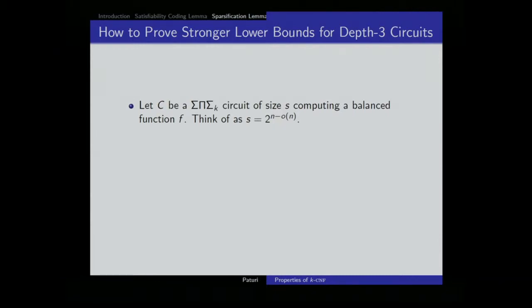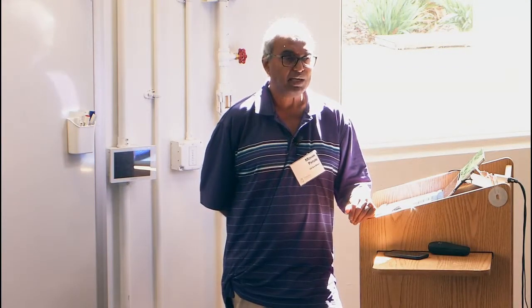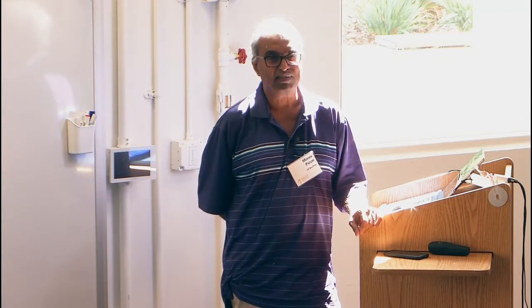There's no progress except for a very, very tiny improvement. I want to give an argument that shows that a random degree-2 GF2 polynomial requires size 2^(n - o(n)). It is somewhat ad hoc, a counting argument, and it will not get used anywhere beyond that counting argument. But at least it shows you the power of sparsification.